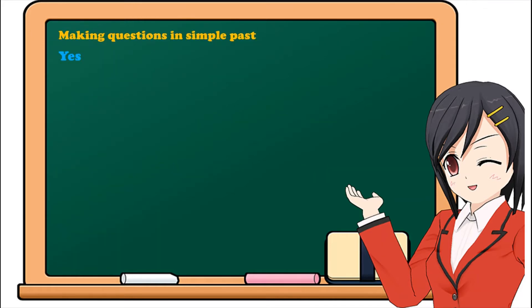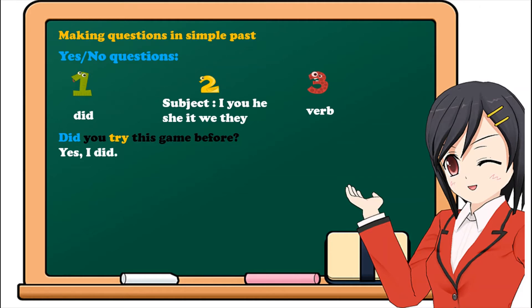Now, let's see how to make questions in simple past. For the yes, no questions, we form it in the following way: Number 1, Did. Number 2, The subject - all subjects: I, you, he, she, it, we, they. Then, the verb. For example, did you try this game before? Yes, I did. No, I didn't.